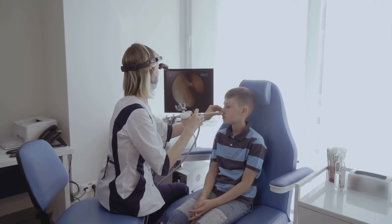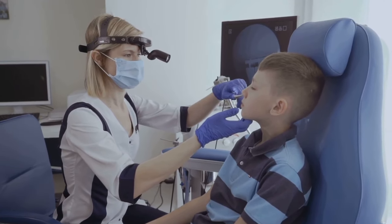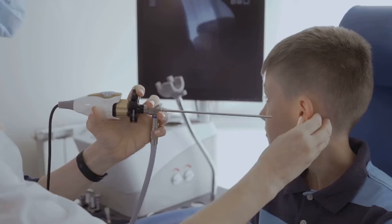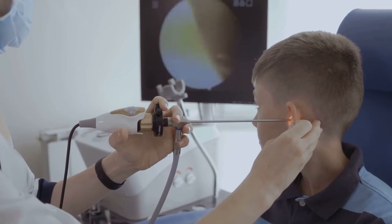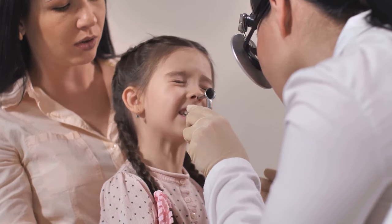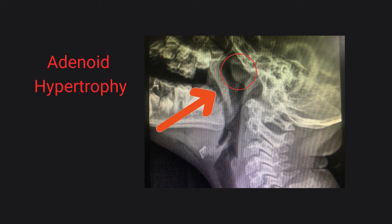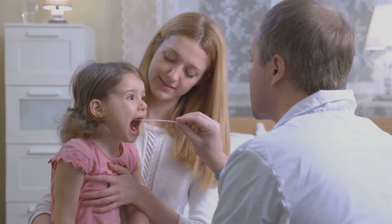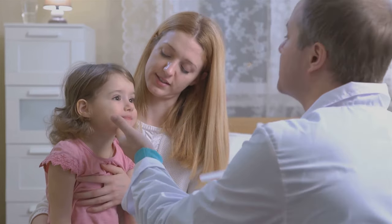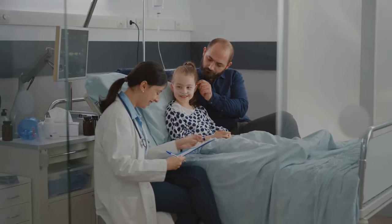Adenoids play a crucial role in the body's immune system, especially in early life, by helping to trap and destroy pathogens that enter through the nose or mouth. However, in the process of defending against infections, adenoids can become temporarily enlarged as they actively produce antibodies. In some children, this enlargement can persist due to chronic infection or an allergic reaction, leading to adenoid hypertrophy. This persistent enlargement can obstruct the nasal passages and eustachian tubes, leading to breathing difficulties, snoring, recurrent middle ear infections, and serous otitis media.